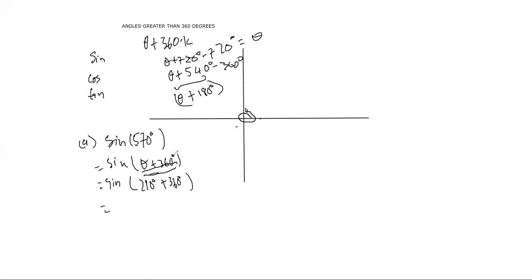360 plus theta. So we know the reduction of 360 plus theta, which is just the same as the reduction of theta plus 360 because they are both positive. This should just give me sine theta because it takes you to the first quadrant. So we can just write this as sine 210.